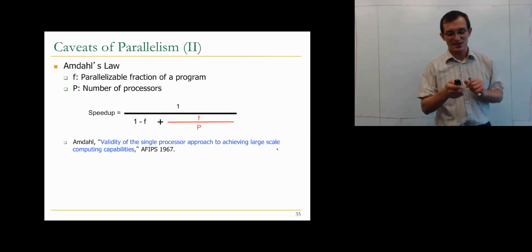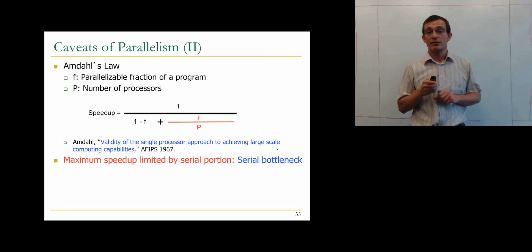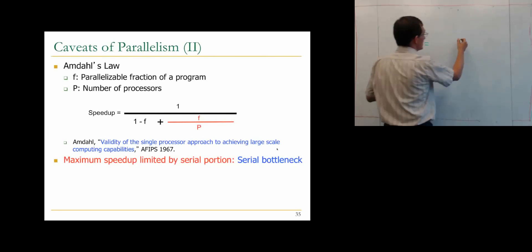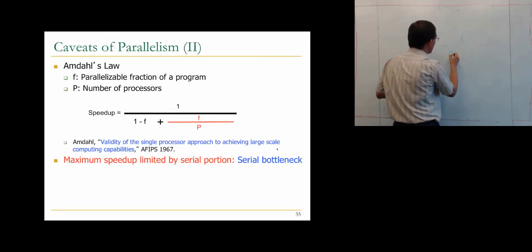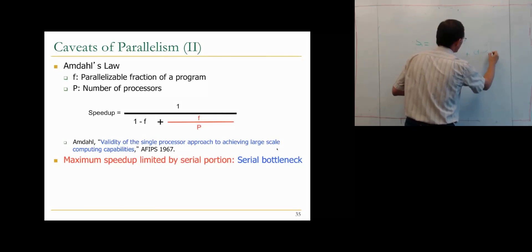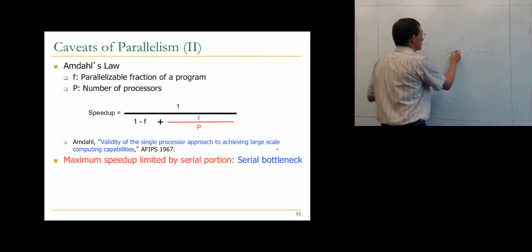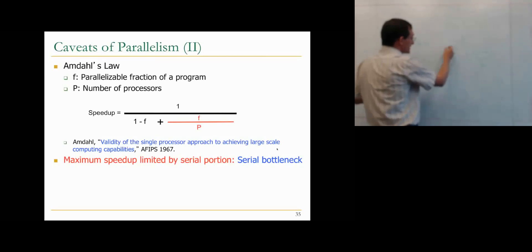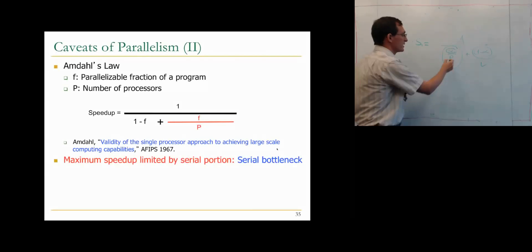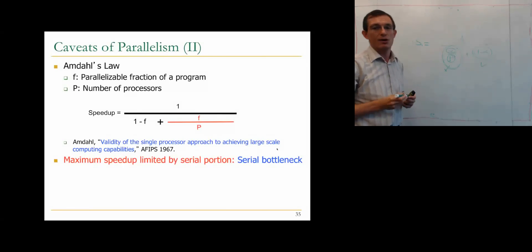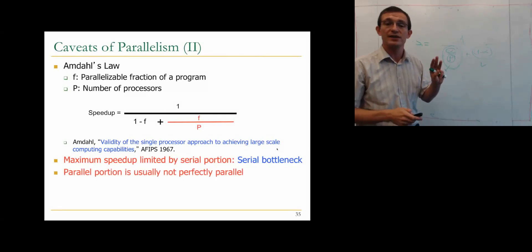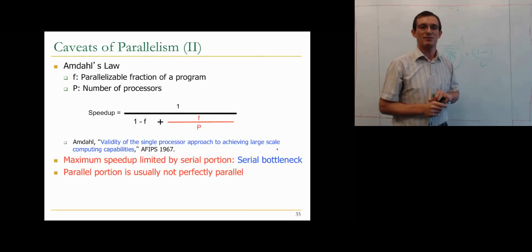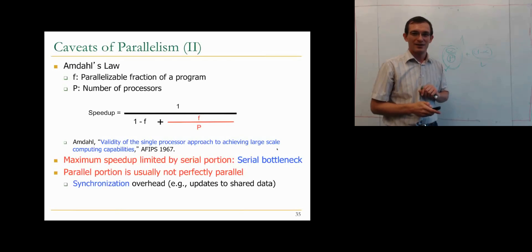Amdahl's law assumes the parallel part of the program is perfectly parallel — meaning speedup = 1 / (alpha/P + (1 - alpha)). But in reality, this parallel part is not perfectly parallel. There are three fundamental reasons for this. I'd like you to think about what those fundamental reasons are — pause and write down your answers before continuing, and we'll check them later.